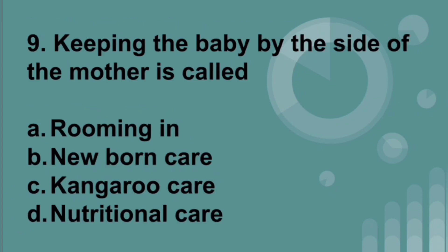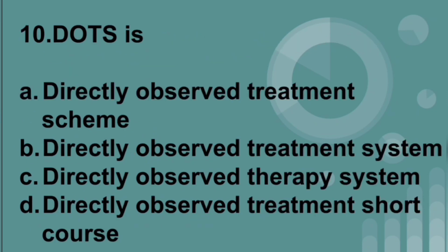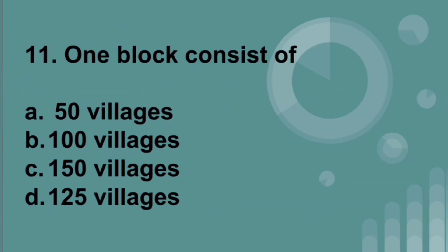Keeping the baby by the side of the mother is called rooming-in. DOTS stands for Directly Observed Treatment Scheme, which is one method of giving treatment for tuberculosis. One block consists of 100 villages.